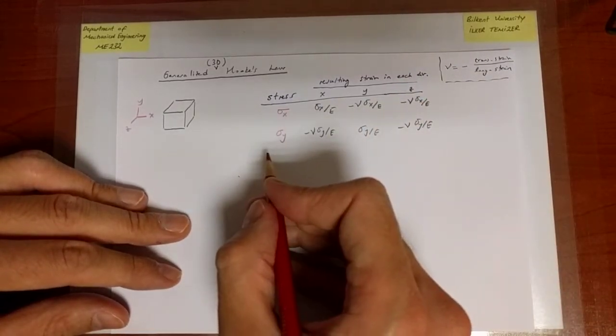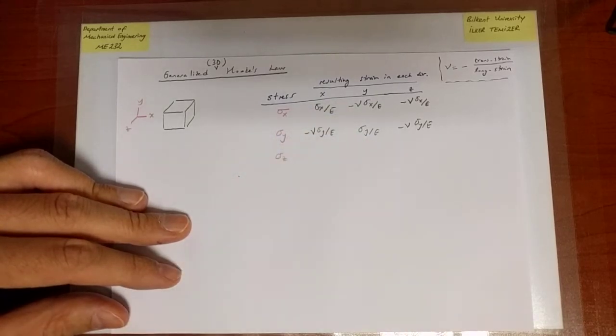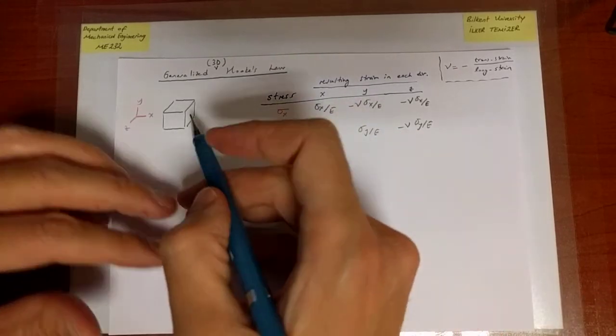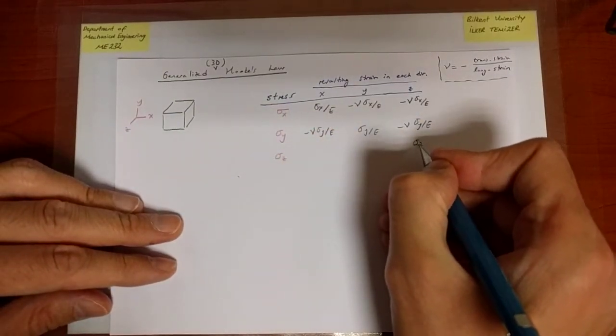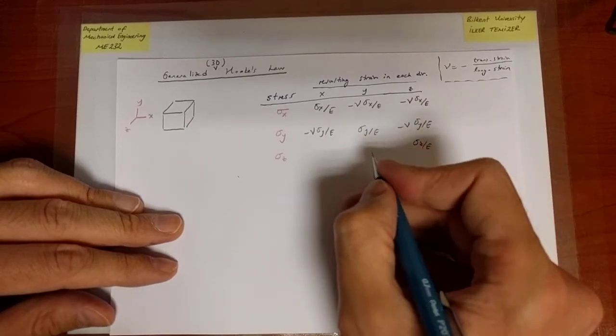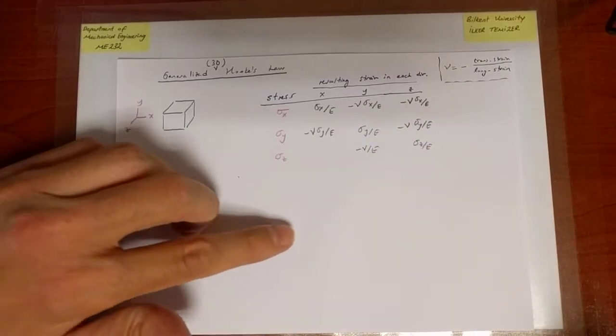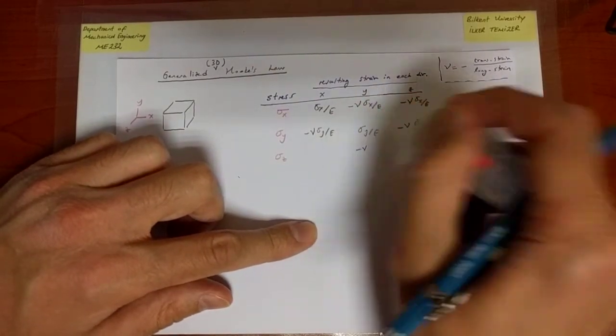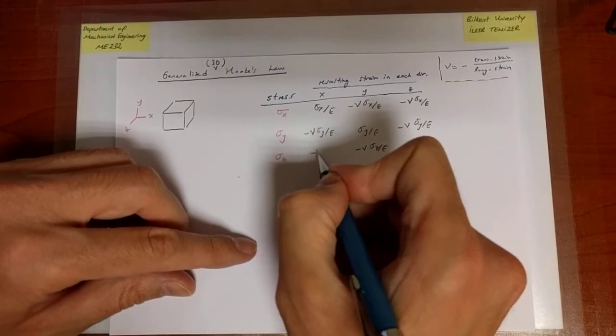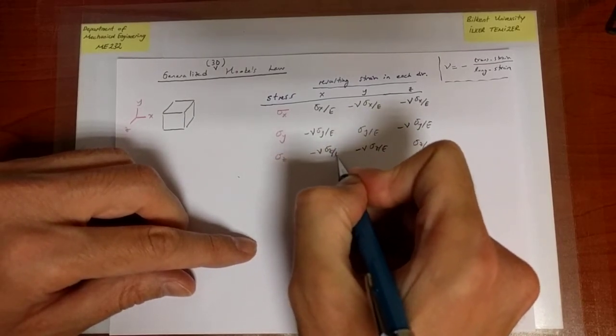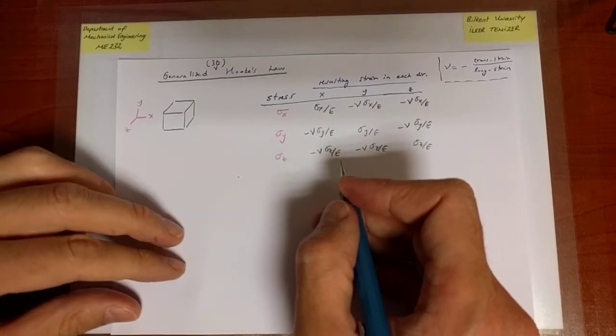And finally, if I do the experiment for the Z direction, and we're forgetting about the other two, we're only pulling along the Z direction, so we're going to have a strain sigma Z over E over here, and then minus nu times the resulting strain sigma Z over E for Y, and minus nu sigma Z over E for the X direction as transverse strains.